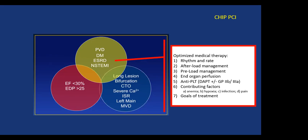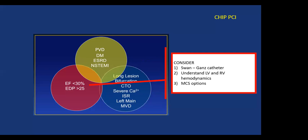Most importantly, it's determining goals of treatment. Just because a patient has high-risk calcified left main, occluded vessels, and severe aortic stenosis doesn't mean they need to be addressed if they have underlying metastatic pancreatic cancer with survival of one to two months. Putting them through everything available would not be appropriate medical treatment. The patient as a whole needs to be considered before we proceed.